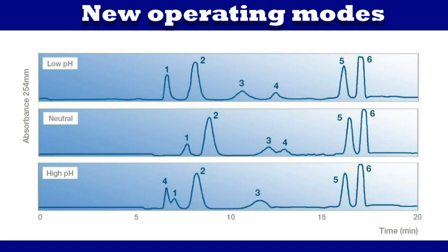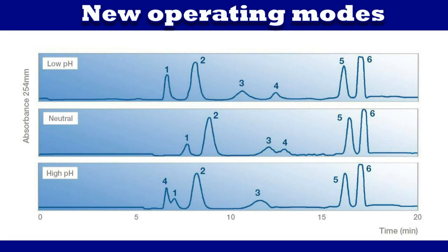Like other chromatography techniques, buffers, additives and pH can be used to change selectivity — but remember all pH ranges could be used because there is no silica stationary phase. The technique is used in the purification of many standard compounds, providing higher sample loadings, lower solvent usage and solutions to previously unsolved problems.